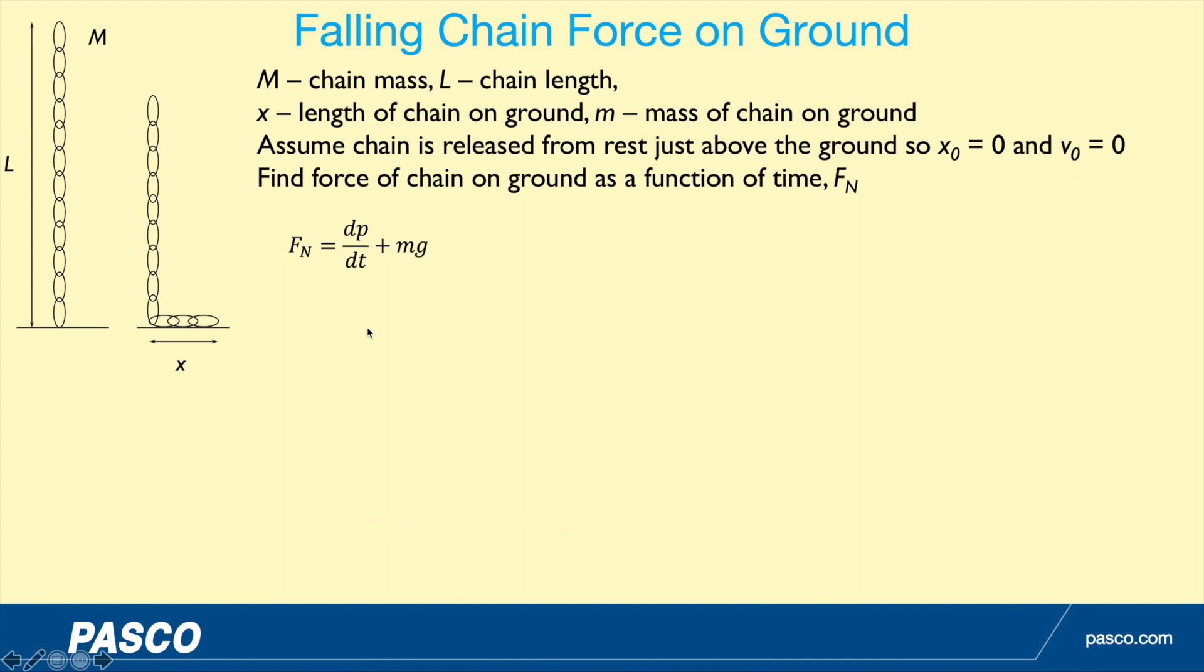The force of the ground on the chain is a normal force. You might think it's just the weight of the chain that's fallen, but remember when the chain hits it's moving and it's going to be stopped. The force from that is the rate of change of momentum, written as dp/dt in calculus form. There's a little bit of calculus in this, but it's a pretty cool technique.